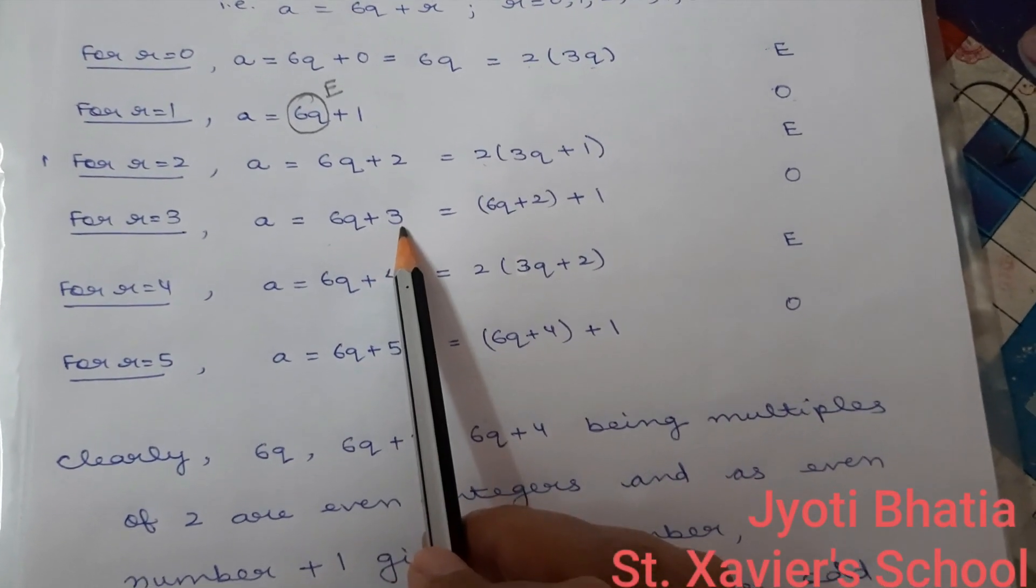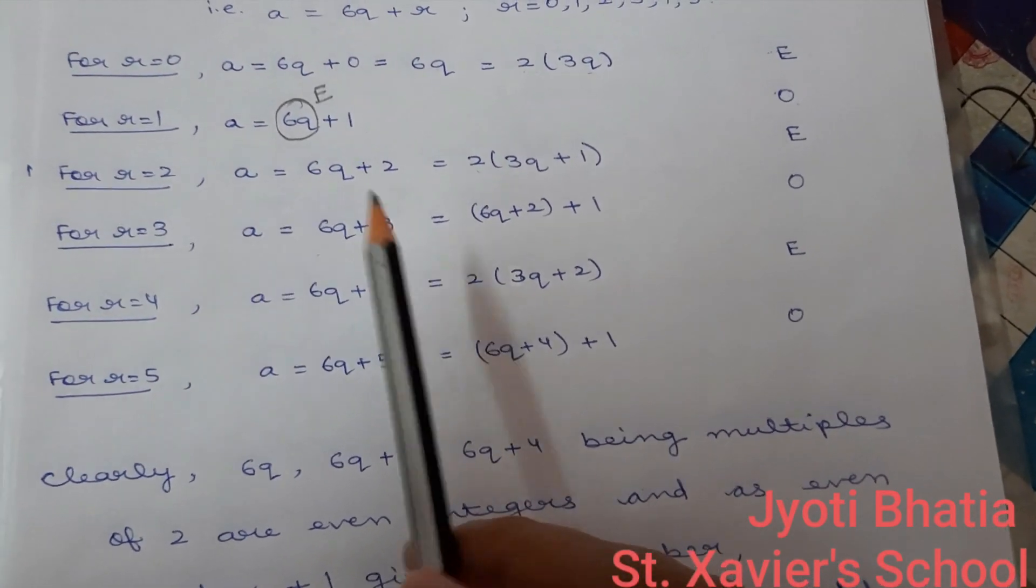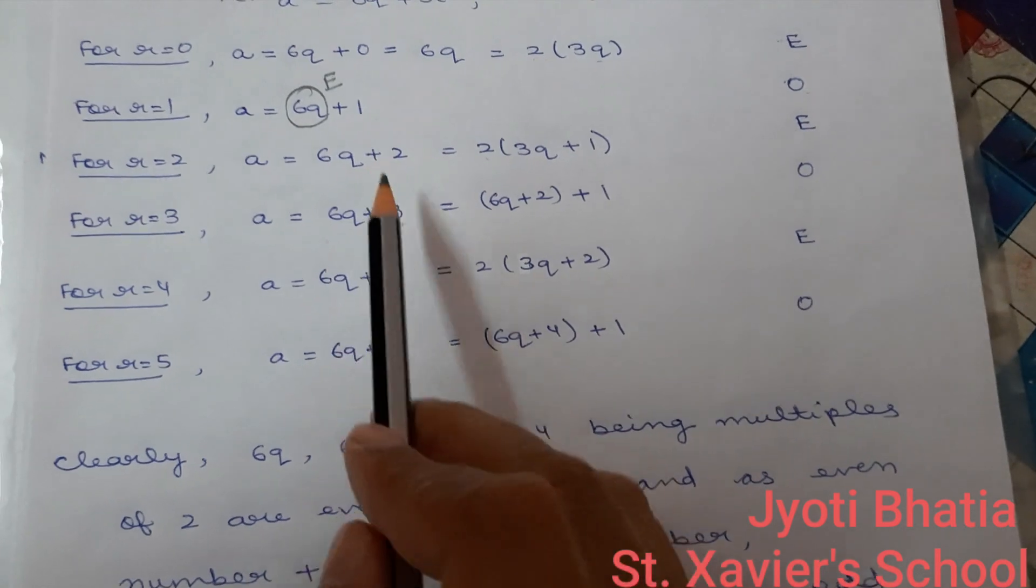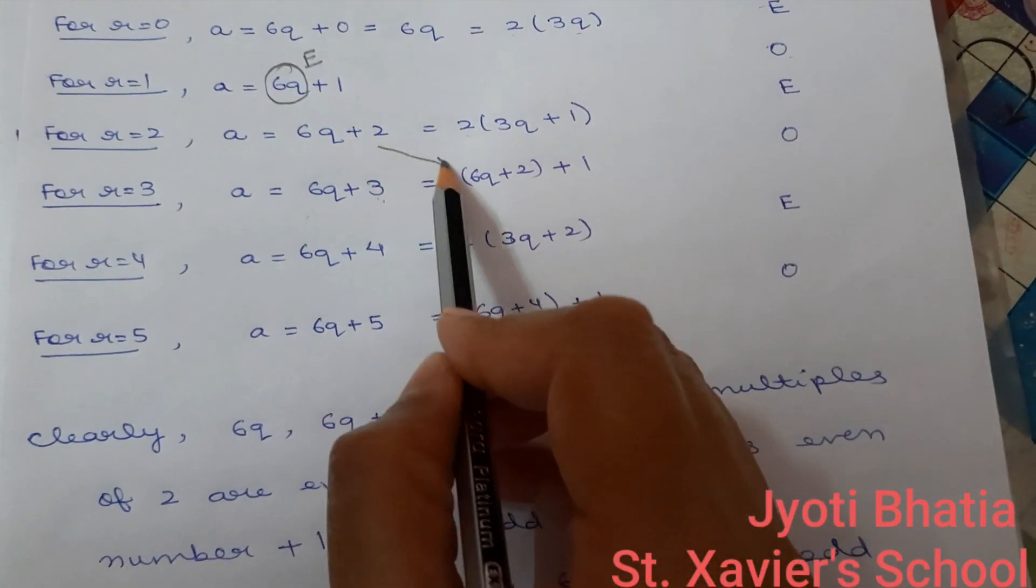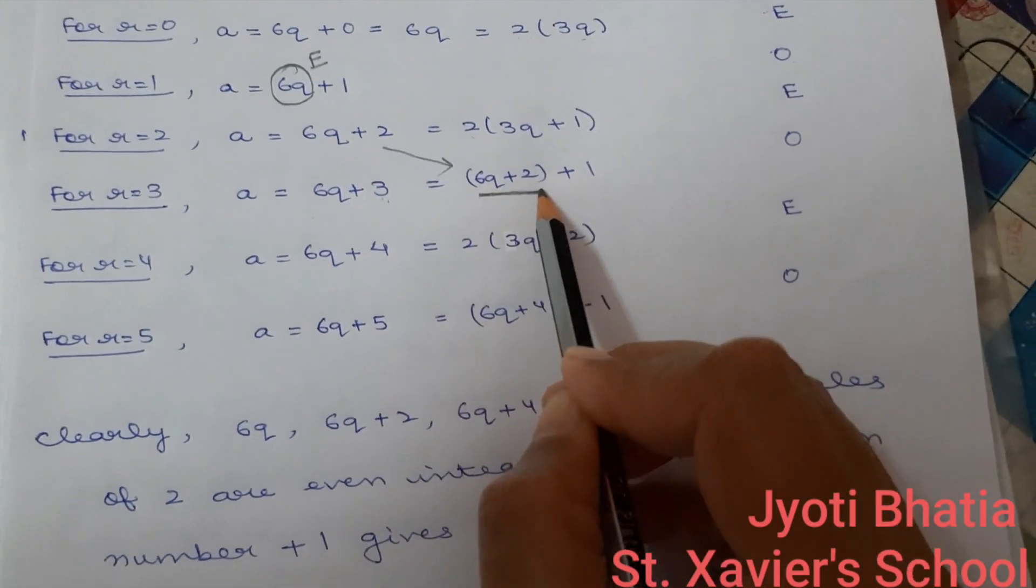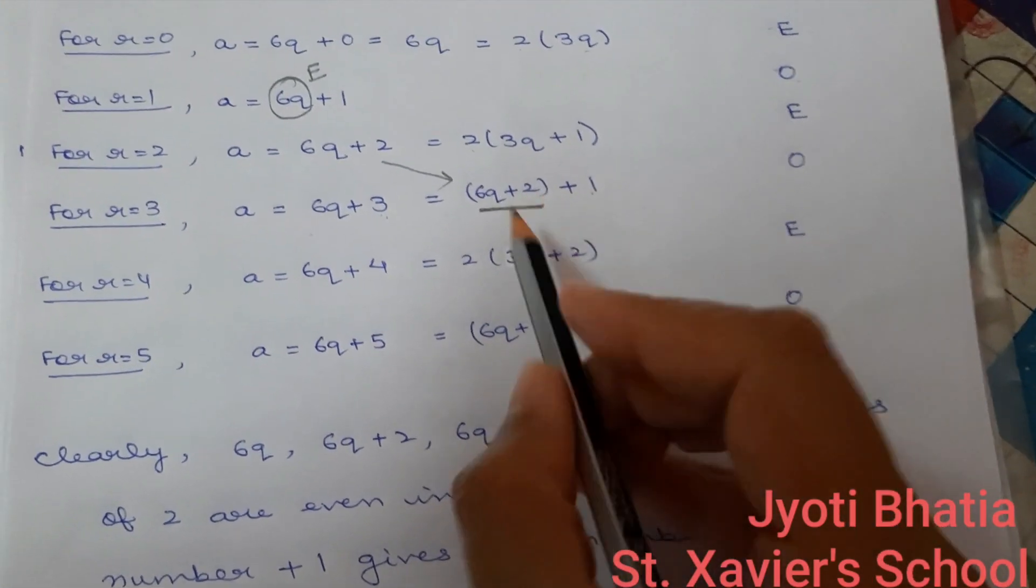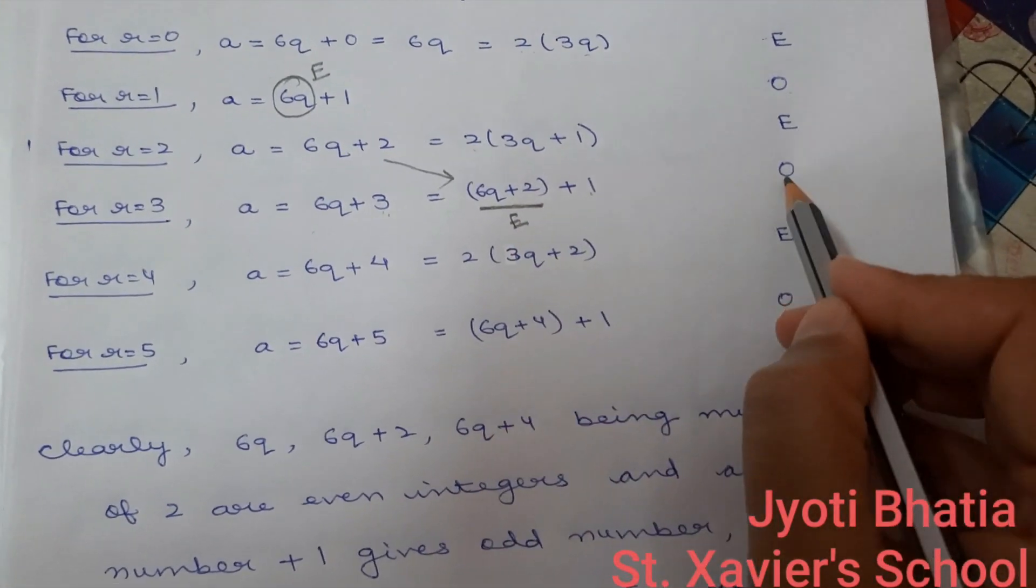6q plus 3. As I told you, we shall follow the definition of even plus 1. So, 6q plus 3, we will break it up as 6q plus 2. That is the previous even number plus 1. So, even plus 1 gives us odd.